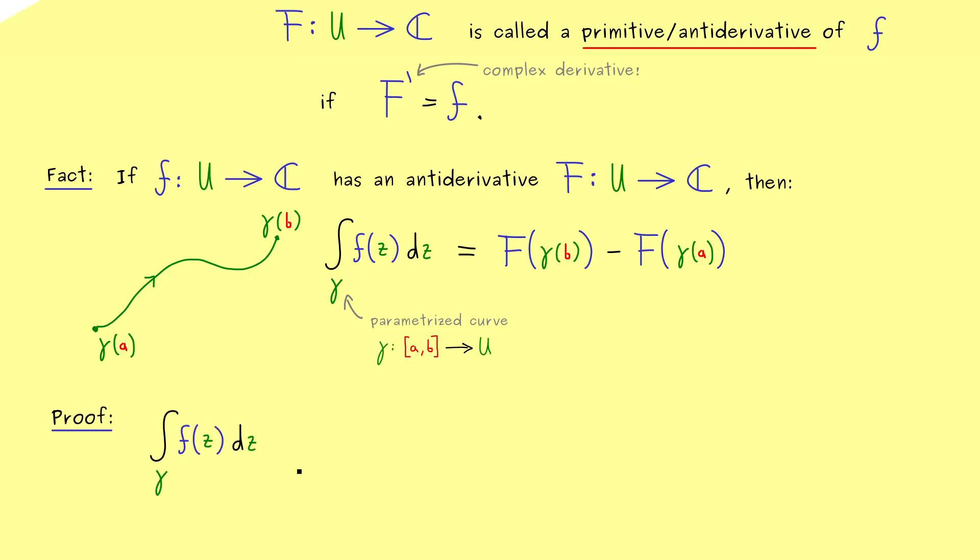Okay so for the first step here in the proof let's recall the definition of the complex contour integral. There we know it's simply given by a complex integral on a real interval. This means it's simply a complex linear combination of two ordinary Riemann integrals in R.